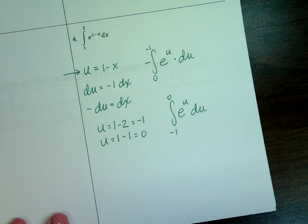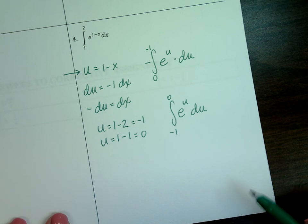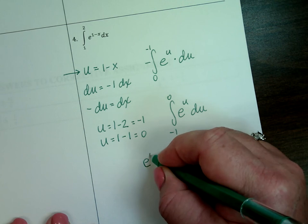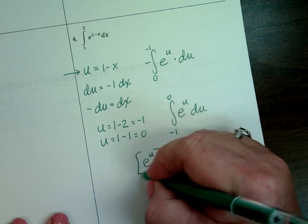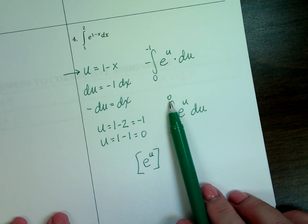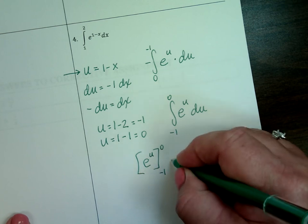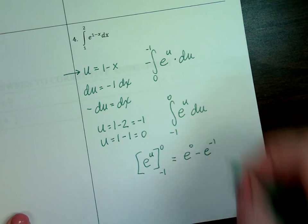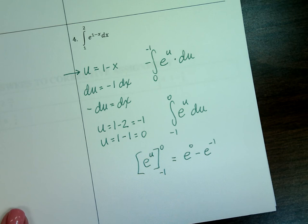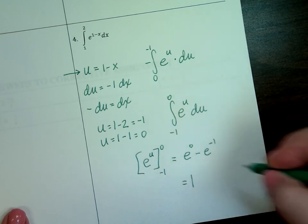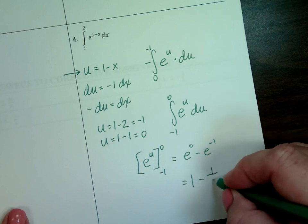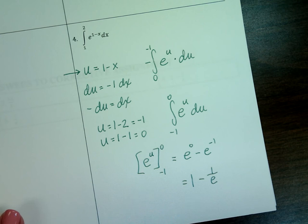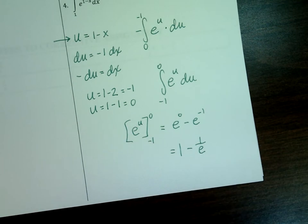The integral of e to the u is e to the u, times the derivative of u which is 1, going between negative 1 and 0. Evaluating: e to the zero minus e to the negative one. e to the zero is 1, and e to the negative one you can leave as e⁻¹ or write as one over e — same thing. And no plus c because I have an actual numerical answer.